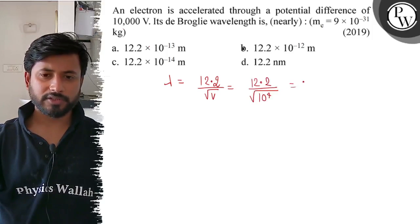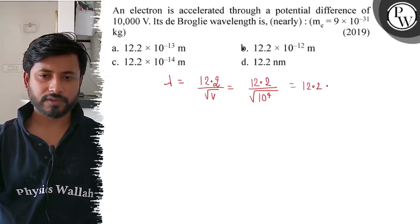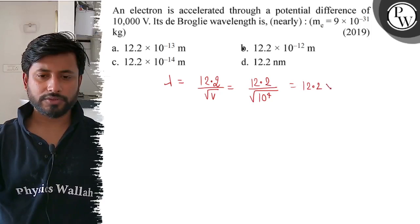Now, if we solve this, we get 12.2 into 10 to the power minus 2 angstroms.